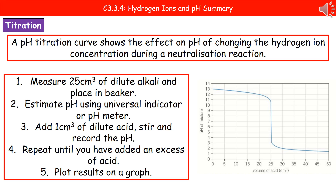Once you've finished all of that, you can plot your results on a graph. Volume of acid goes along the bottom on the x-axis, and the pH of your mixture goes on the y-axis up the side. What you can see is that at 25 cm³, we reach the point of neutralization — you can draw lines across from pH 7 to the curve and down to the x-axis, and you would find that it's 25 cm³ of acid that neutralized our alkali.